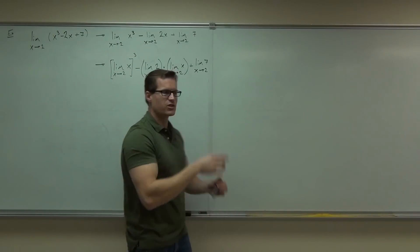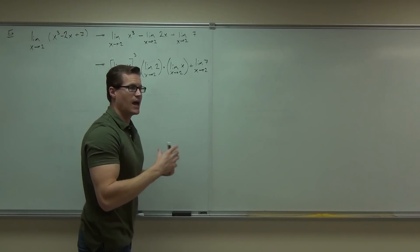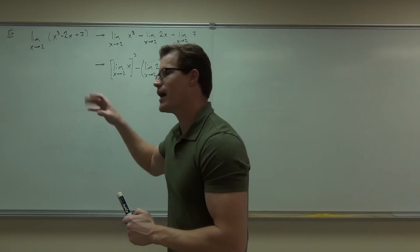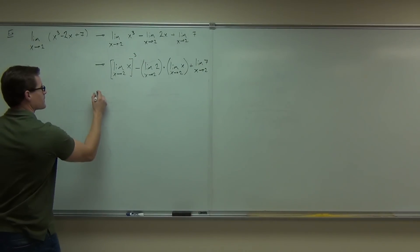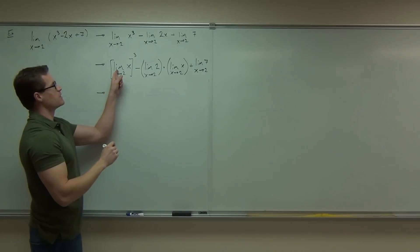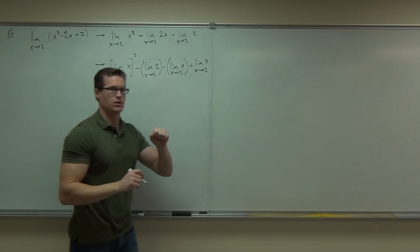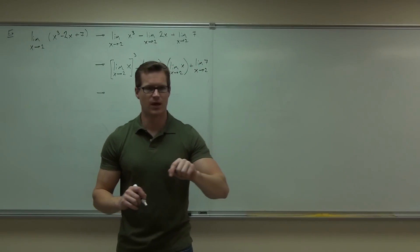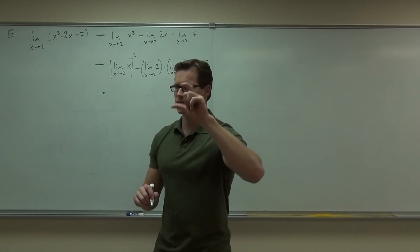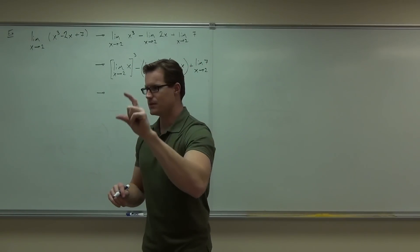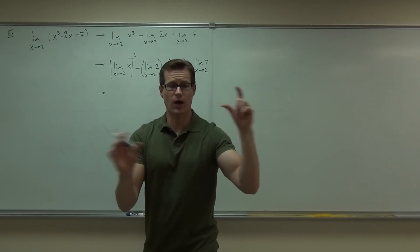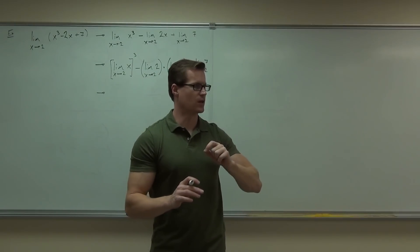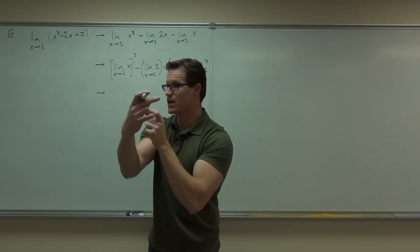Since we've broken it up into such simple components, you can now use those two basics — there are only two basics — to actually evaluate this limit. The limit of x as x approaches a is a. The limit of a constant c, no matter what, is c. The limit of a constant is the constant itself, and the limit of x is a, whatever it's approaching.